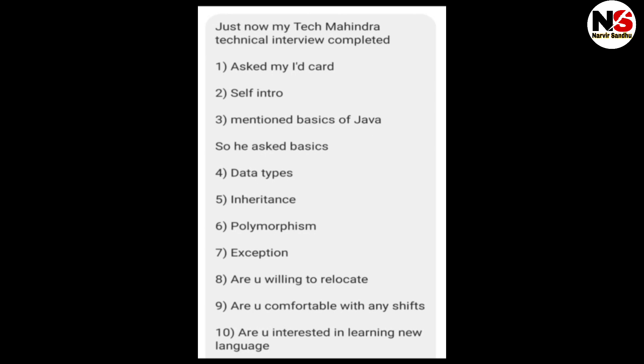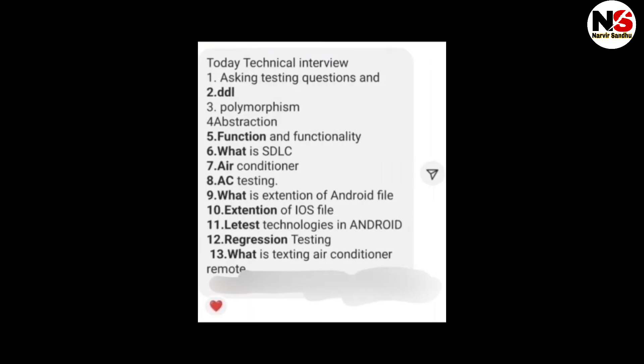The next interview also started with a government ID proof, then self-introduction. Since the candidate mentioned Java basics, the interviewer asked about data types, inheritance, polymorphism, and exception handling. Then HR questions followed: are you willing to relocate, are you comfortable with any shift, and are you interested in learning new languages?